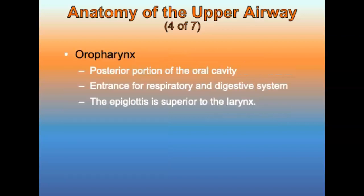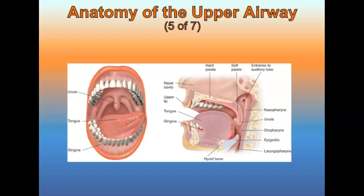The oral pharynx is the posterior portion of the oral cavity. The epiglottis is superior to the larynx and helps prevent food and liquid from entering the larynx during swallowing.